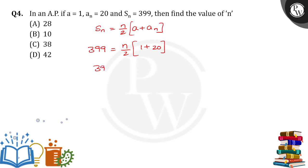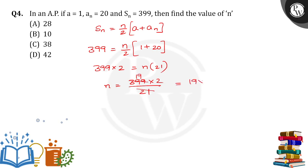So 399 equals N into 21 divided by 2. Solving, 21 cancels, therefore N equals 38, which is the right answer.